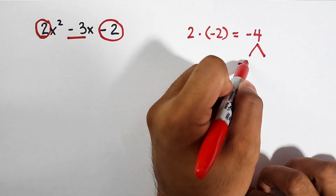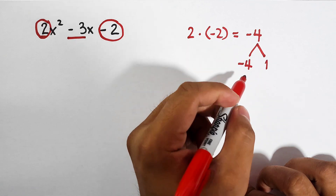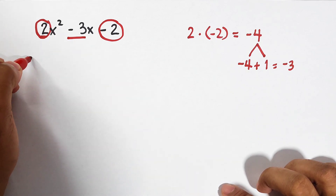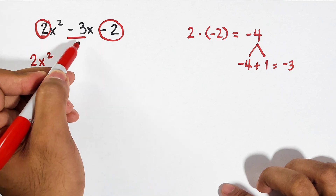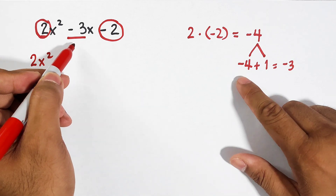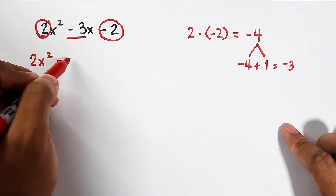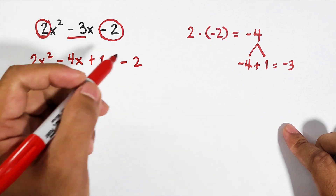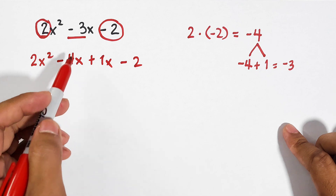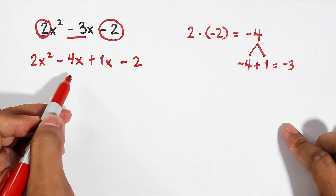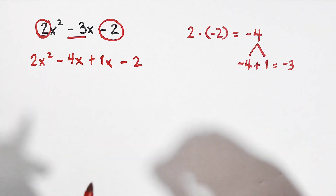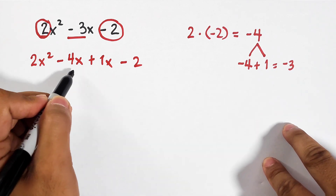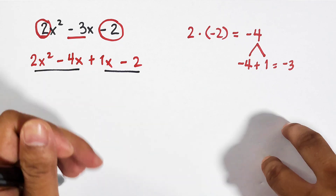The factors would be negative 4 times 1, because when we add negative 4 and 1, it gives us negative 3. Next, we copy the first term, 2x squared, and replace negative 3x with negative 4x plus 1x, then copy minus 2. So we have 2x squared minus 4x plus 1x minus 2. Negative 3x is the same as negative 4x plus 1x. Now we do factoring by grouping, regrouping these four terms into two groups.